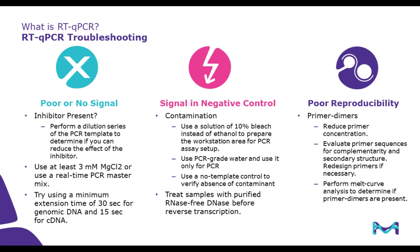Even when experiments are planned carefully, there can still be unanticipated issues. Poor or no signal may occur when an inhibitor is present — to combat this, perform a dilution series of the PCR template to determine if you can reduce the inhibitor effect. You can also use at least 3 millimoles of magnesium chloride or a real-time PCR master mix, and adjust the minimum extension time to 30 seconds for genomic DNA and 15 seconds for cDNA. Another concern is seeing a signal in a negative control — contamination is often the culprit. To avoid this, use 10% bleach instead of ethanol to prepare your workstation, use PCR-grade water only for PCR, use a no-template control to verify the absence of contaminants, and treat samples with purified RNase-free DNase before the reverse transcription steps.